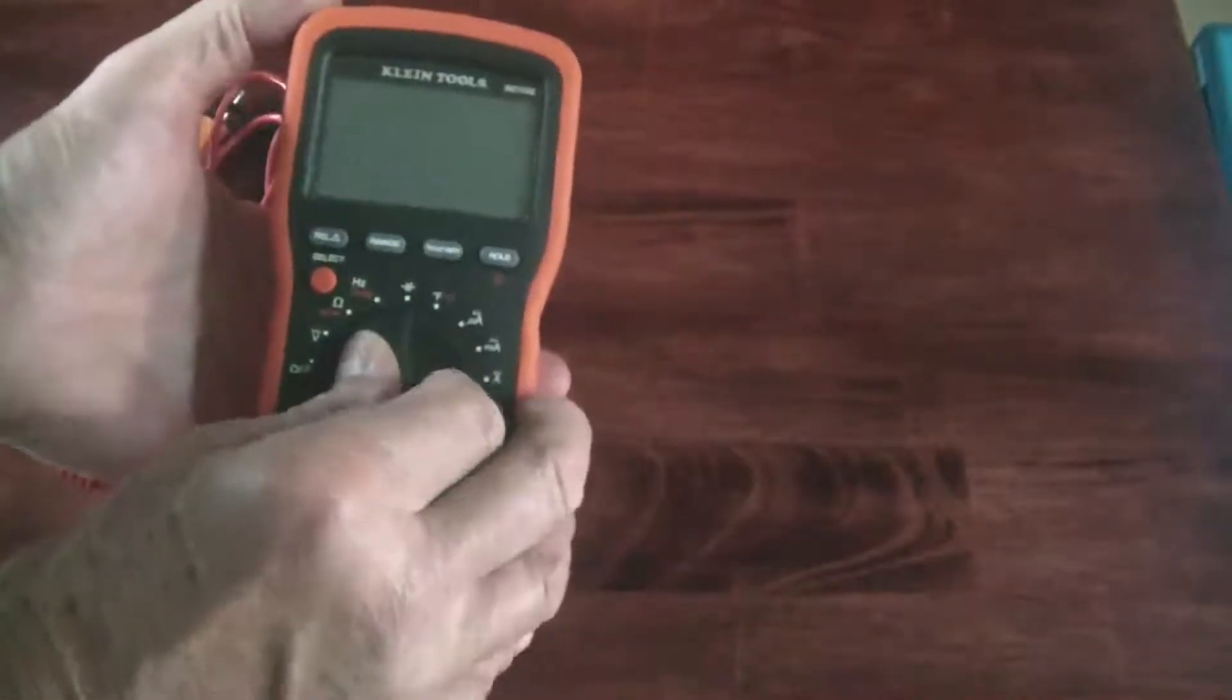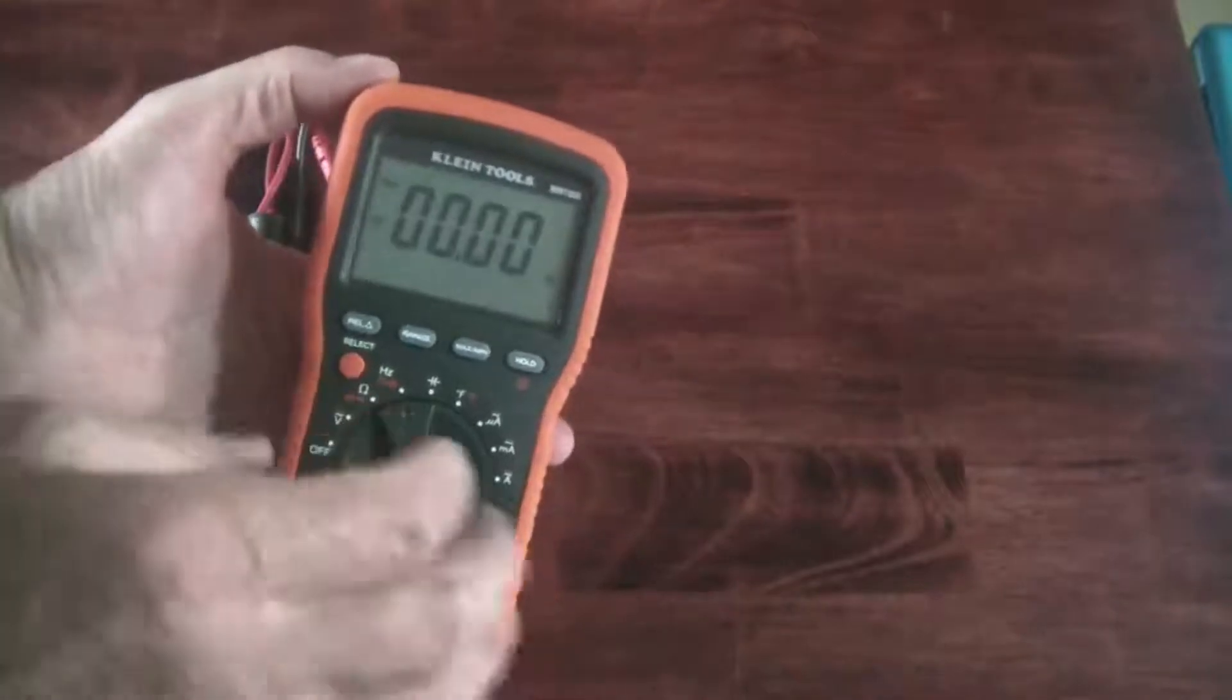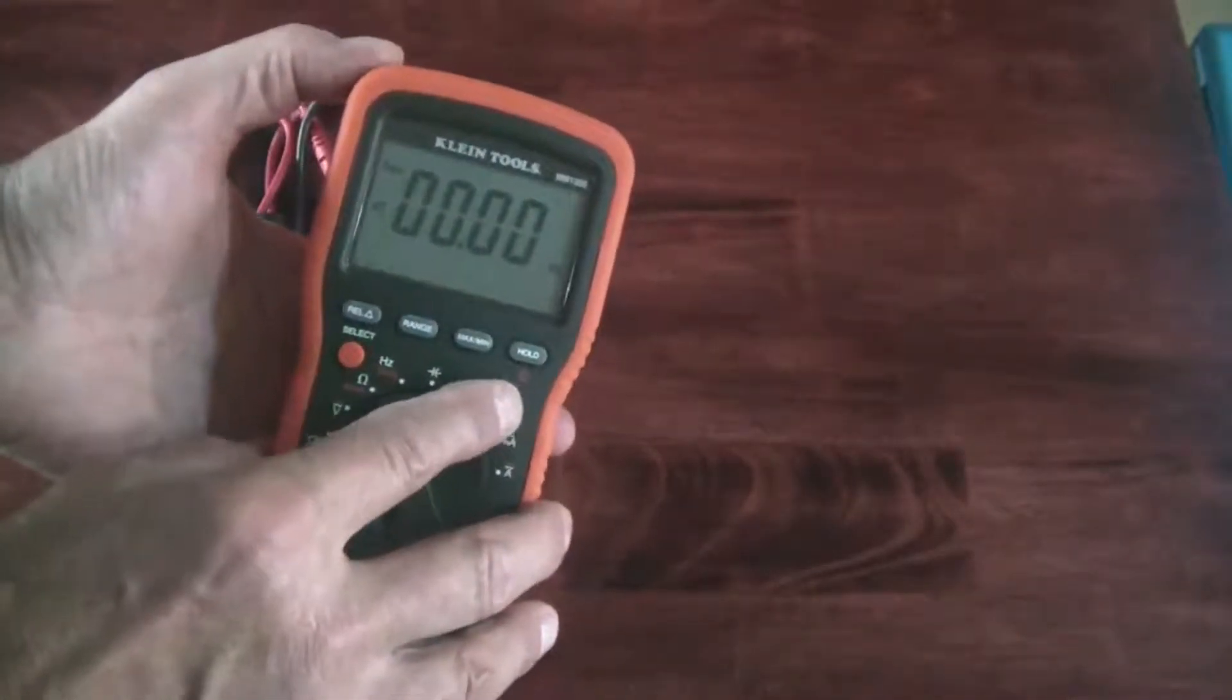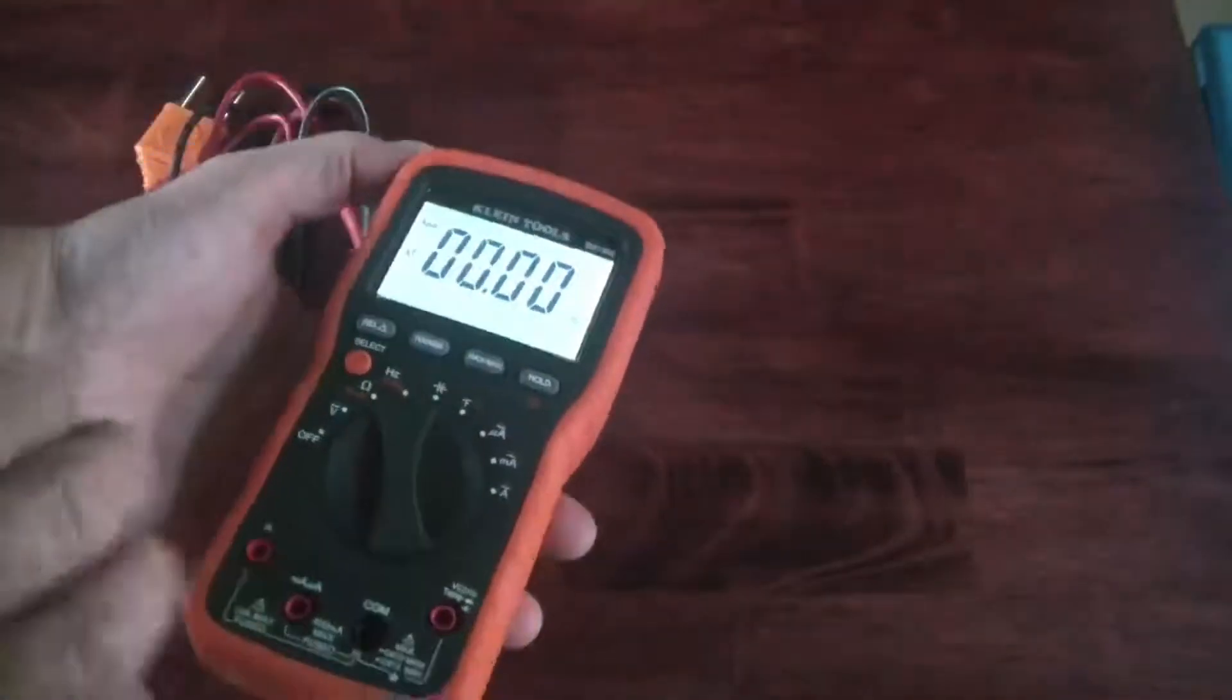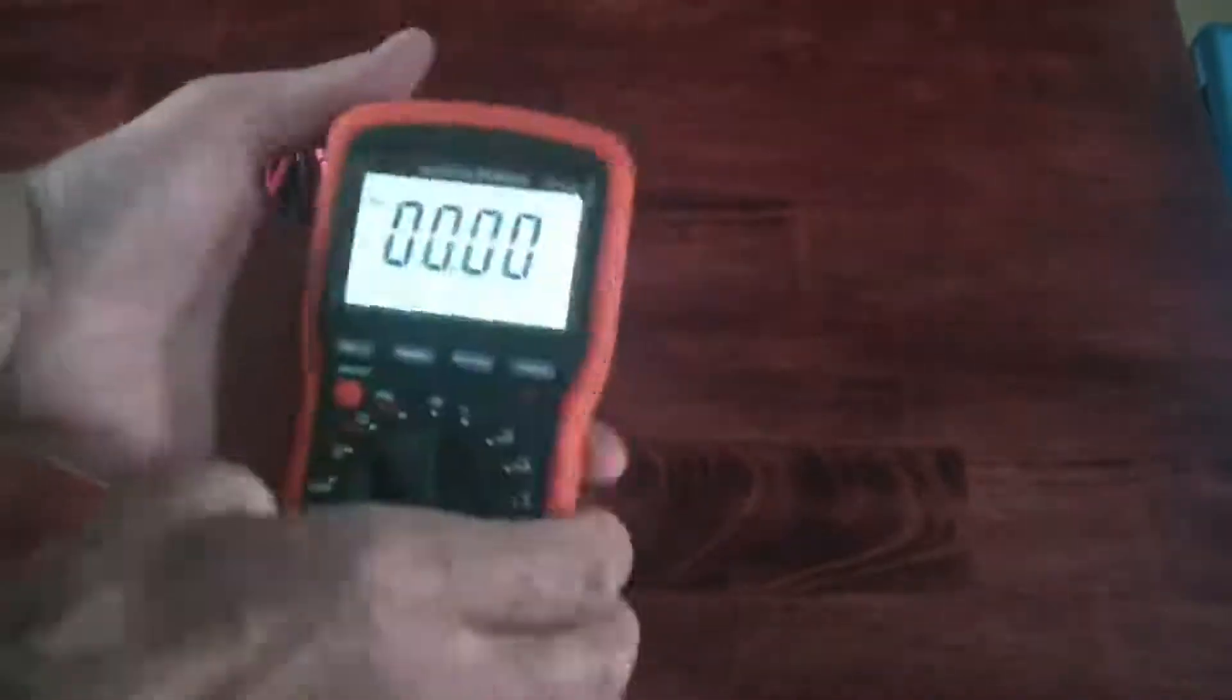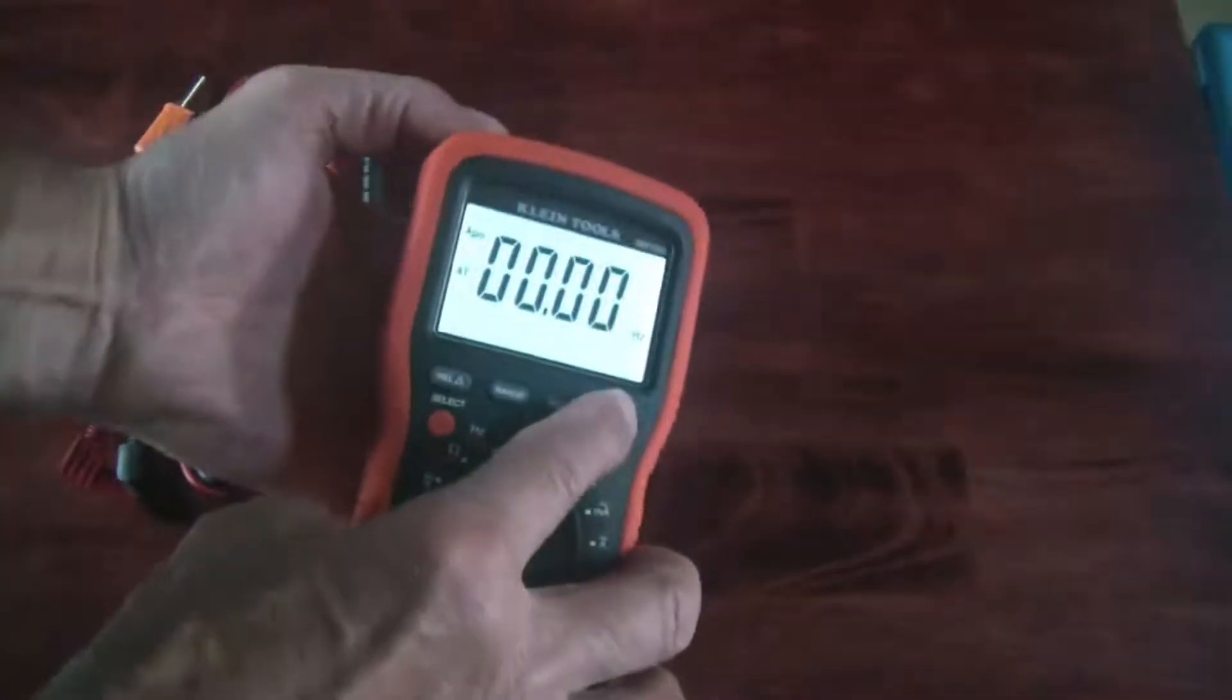The multimeter has a very nice display on it, really large numerals which are quite nice. This button on the end here is the hold button, but it also, if you press and hold it, it will turn on the back illumination. And it's a very even light and it does have good side to side legibility.